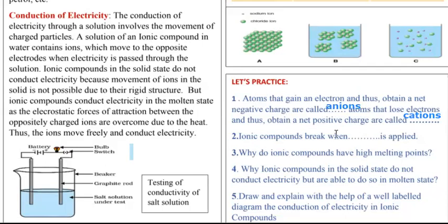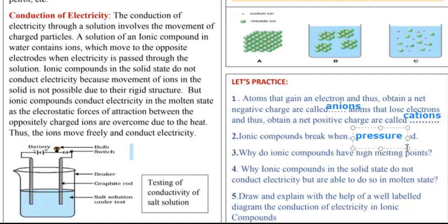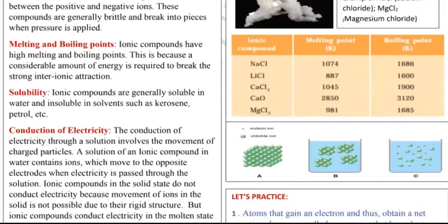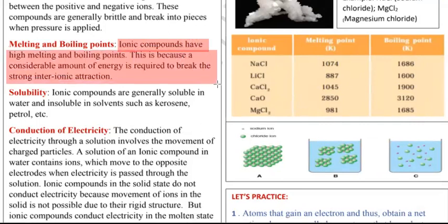When pressure is applied, ionic compounds break — so the answer is: ionic compounds break when pressure is applied. Question 3: Why do ionic compounds have high melting points? The answer is: ionic compounds have high melting and boiling points because a considerable amount of energy is required to break the strong interionic attraction.